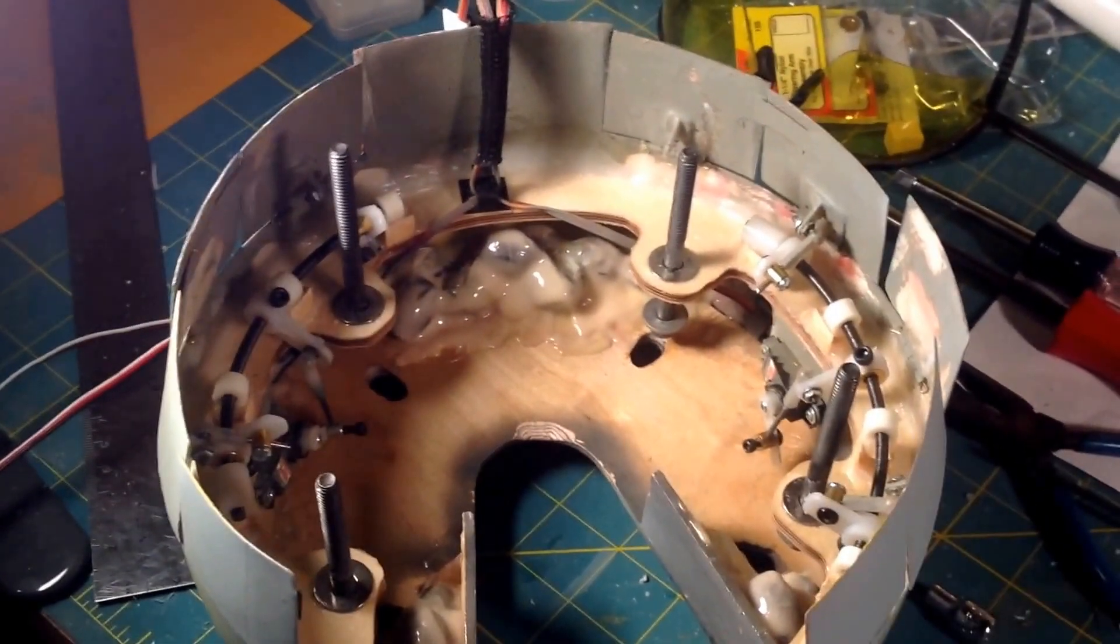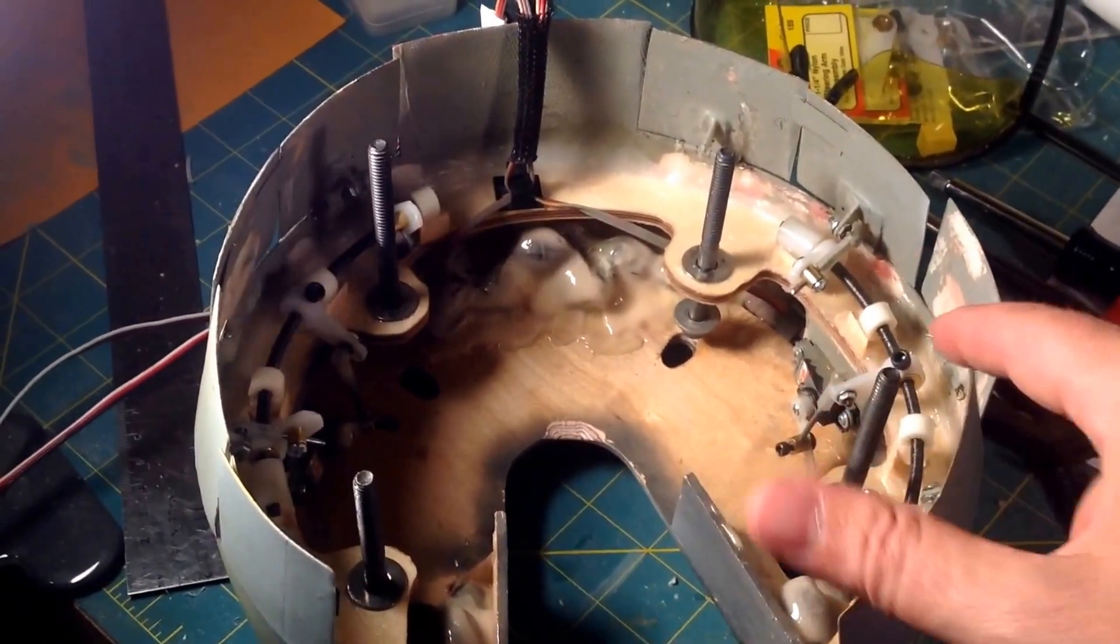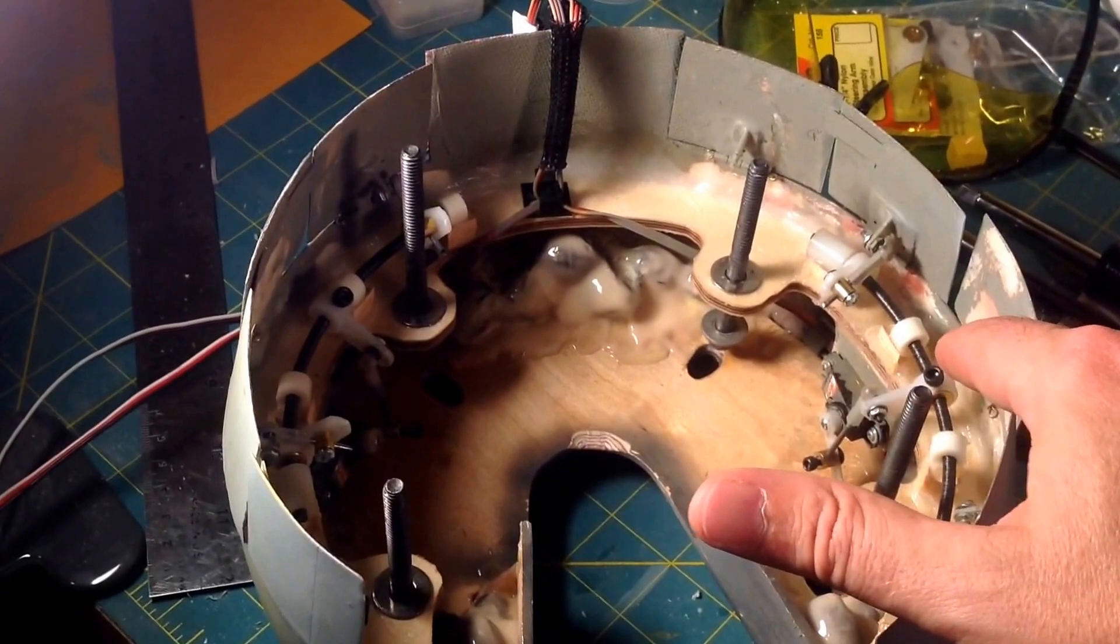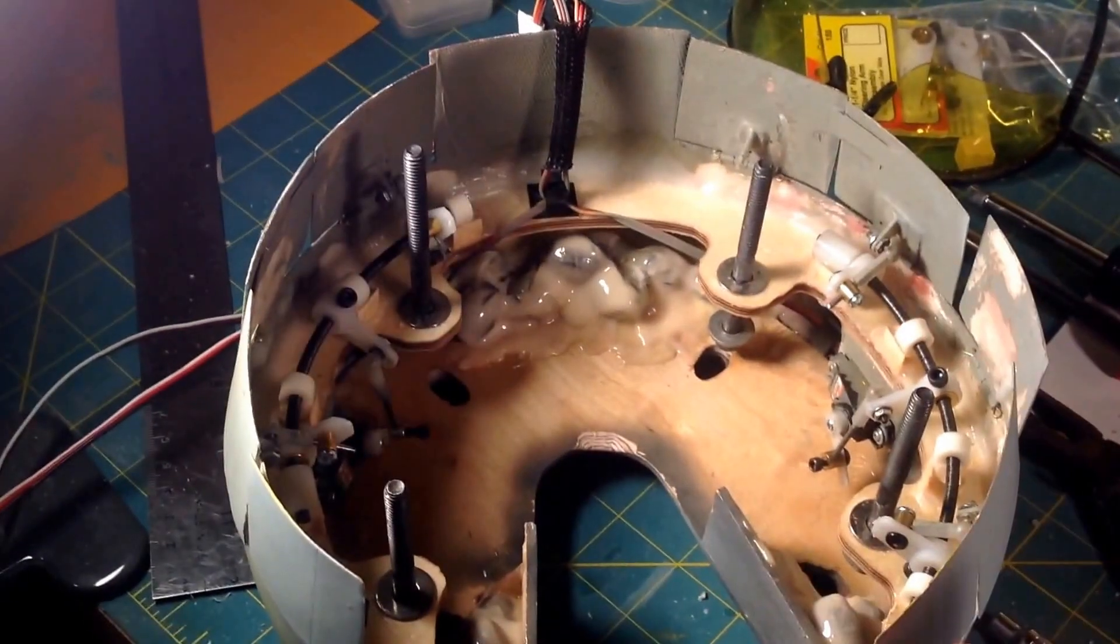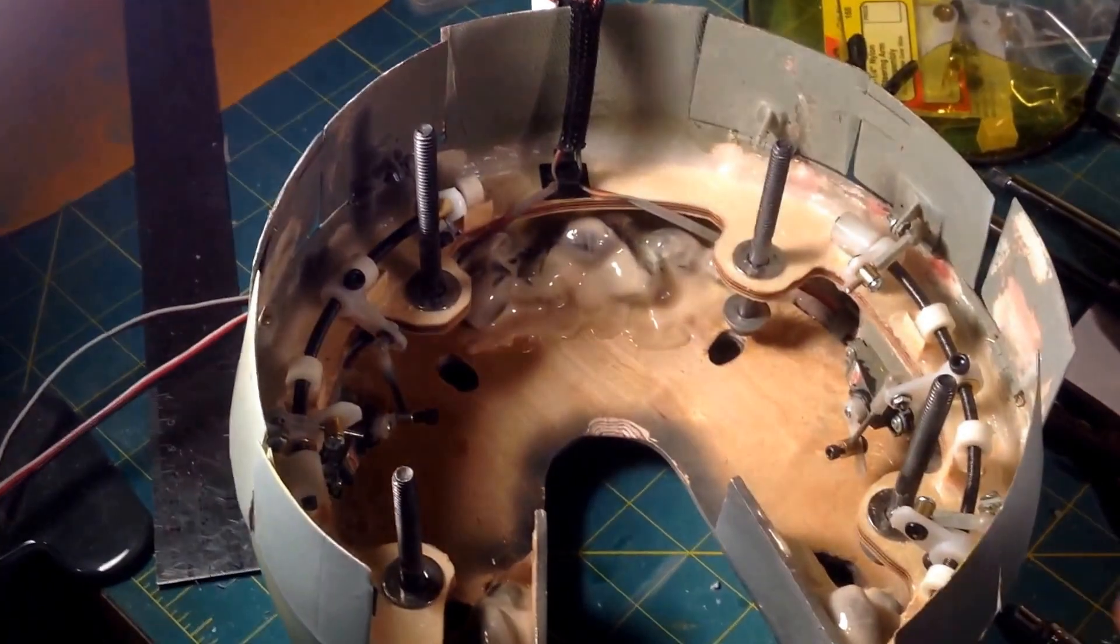You'll see as the servo turns down here, it pushes up on the main drive horn here. And then I've got two horns, one on each end that are connected to the cowl flaps that it will drive.